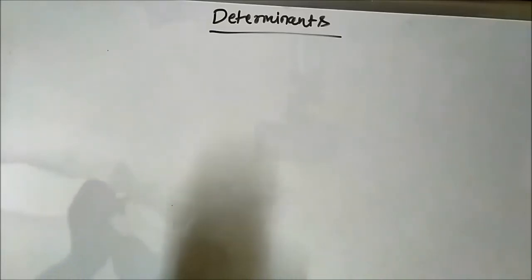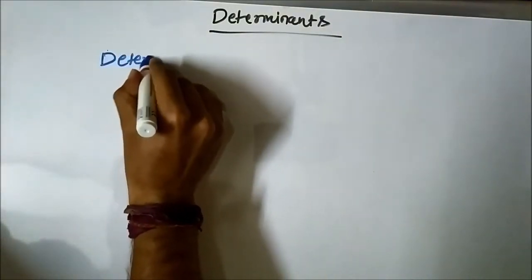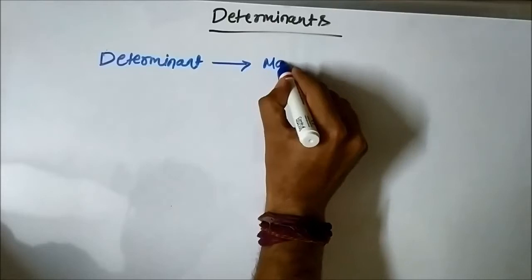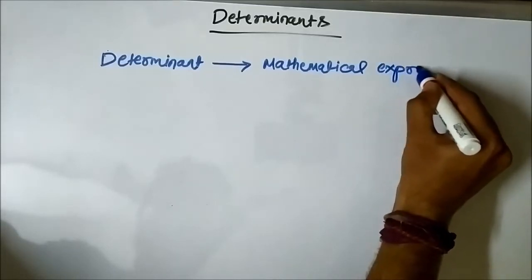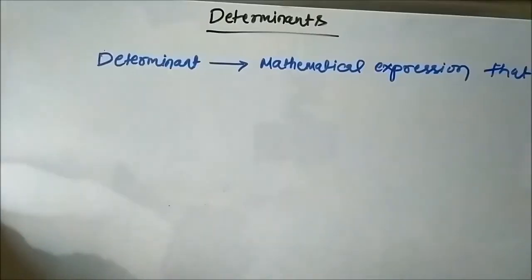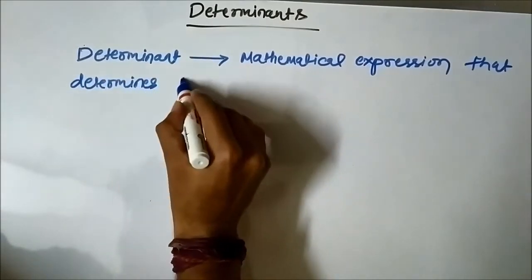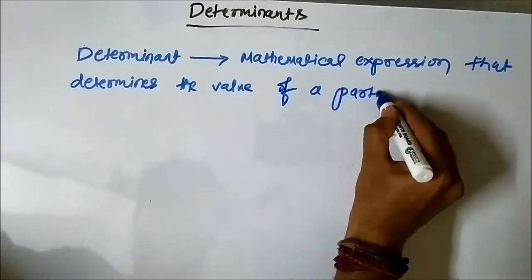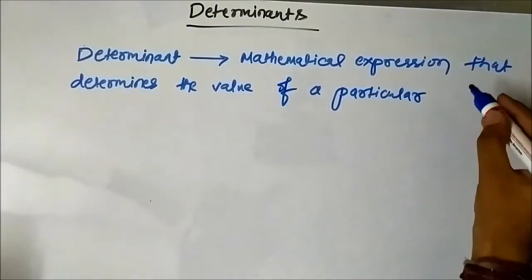The first thing to understand is: what is a determinant? What is the definition of a determinant? Basically, a determinant is a mathematical expression that determines the value of a particular quantity. The quantity can be anything related to the field in which it is used.